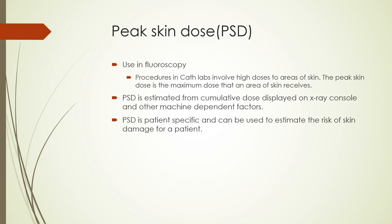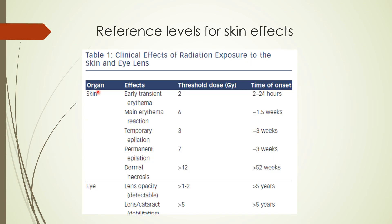For deterministic effects such as skin damage, we can use the peak skin dose, or PSD. For patients who undergo procedures in the cath labs because of high doses involved, we typically want to calculate the peak skin dose for that patient. Peak skin dose is a deterministic effect that has a threshold for the effect to occur. It is calculated from cumulative dose displayed on the imaging console as well as various correction factors applied to the displayed dose. Peak skin dose is patient-specific and is used to estimate the risk of skin damage to the patient. This table shows various threshold doses for different skin effects to occur. These threshold doses are applicable to patient doses particularly in the interventional suites. Note that the dose unit used for deterministic effects is milligray or gray.